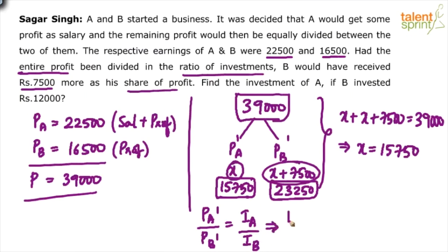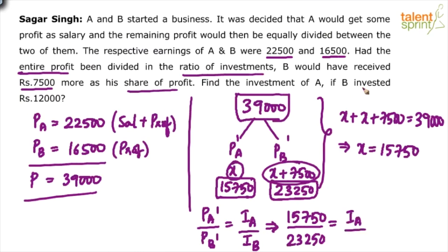Pa dash is 15,750 and Pb dash is 23,250, so we have 15,750 / 23,250 = investment of A / 12,000. Investment of B is given as 12,000. Solve this equation to find the investment of A.